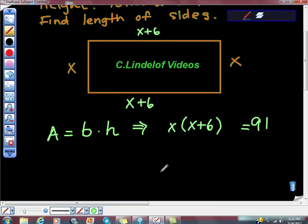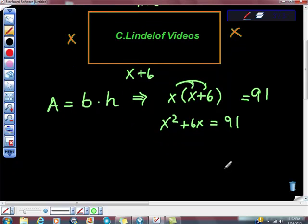Now what? Really? Good job, boy. Distribute and distribute. x squared plus six x equals what? Duh. 91. This is a quadratic, yeah? So we're going to take x squared plus six x minus 91 equals zero.